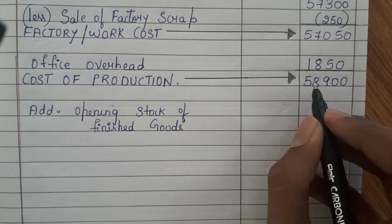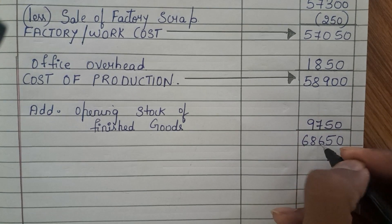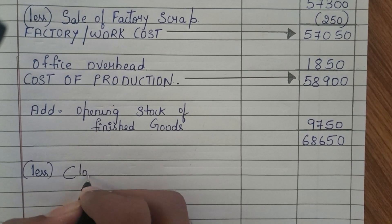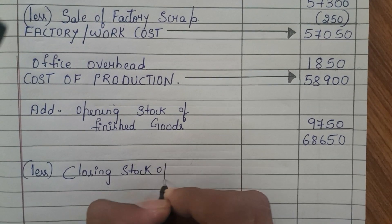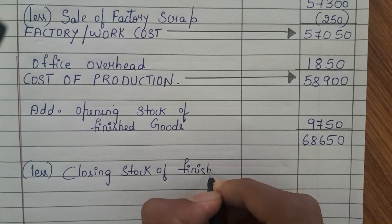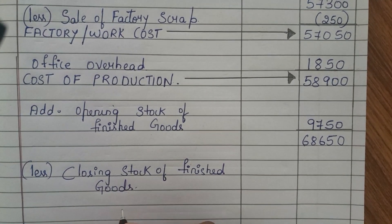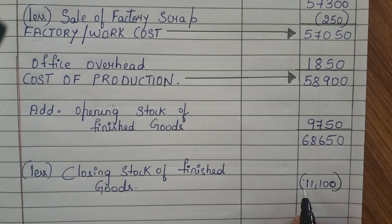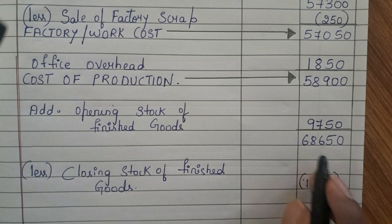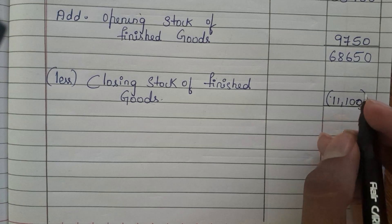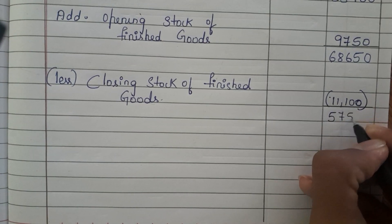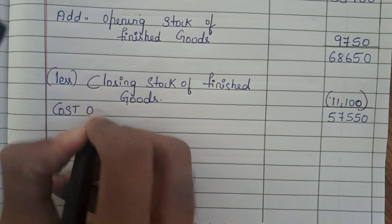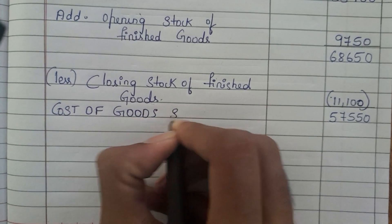Now we need to subtract closing stock of finished goods. Closing stock of finished goods is 11,100. Subtracting 11,100 from 68,650, we get 57,550. This is nothing but our cost of goods sold — 57,550 rupees.